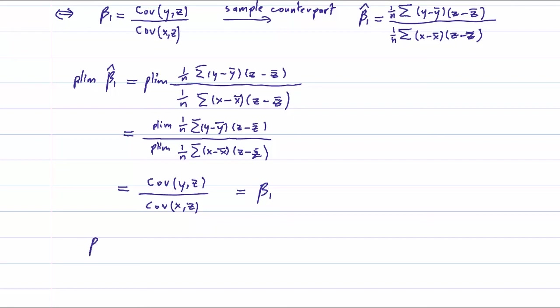So beta one hat, using an instrumental variable, is a consistent estimator of beta one.